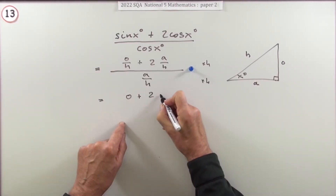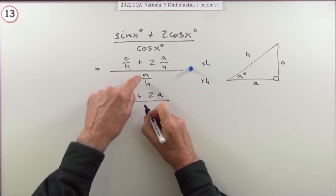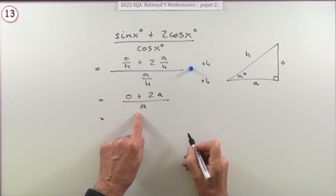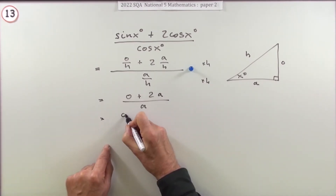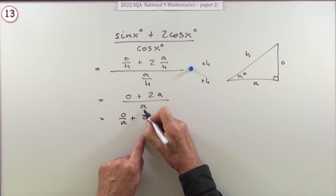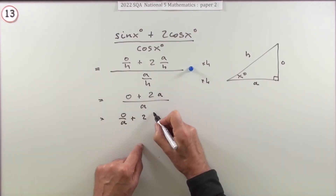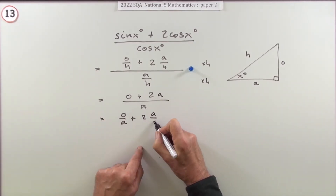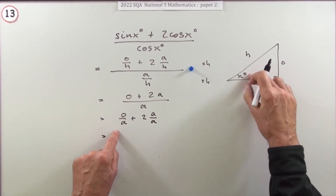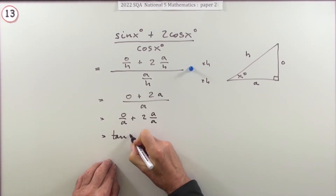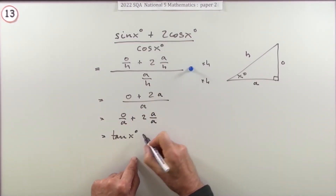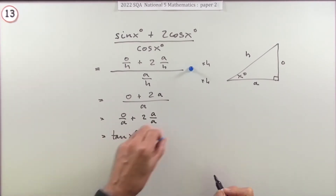Splitting that as before into two parts: o over a, plus 2 times a over a. Now o over a — opposite over adjacent — is tangent. And a over a cancels out to 1, leaving plus 2 as before. So the result is the same: tanx + 2.